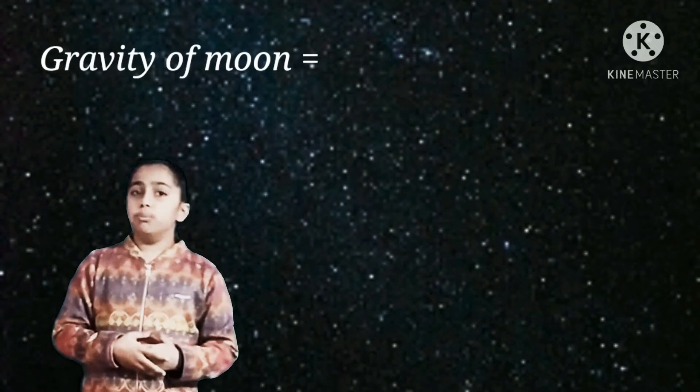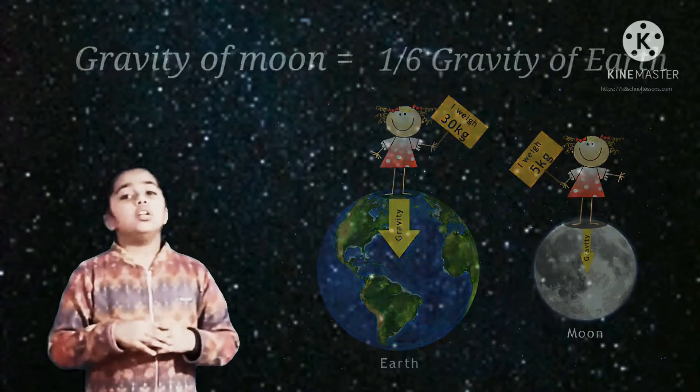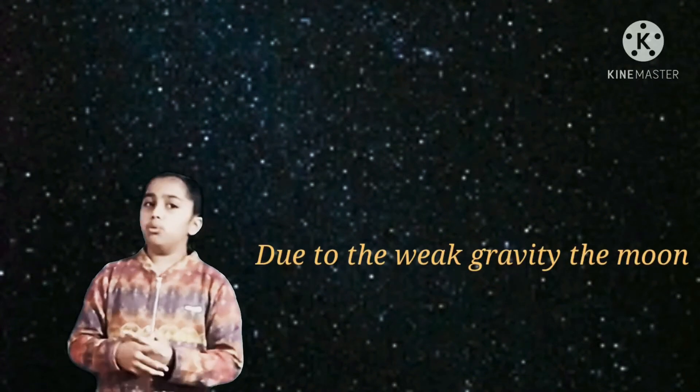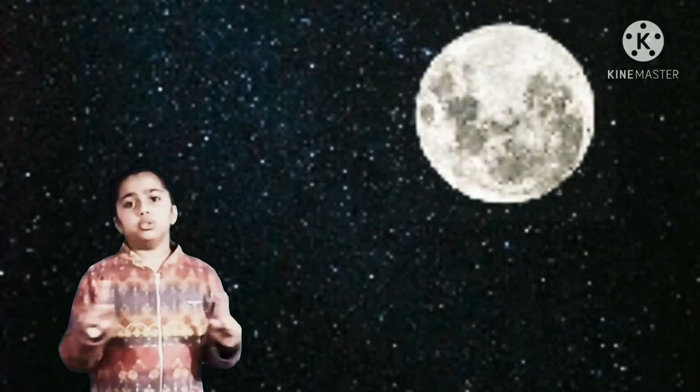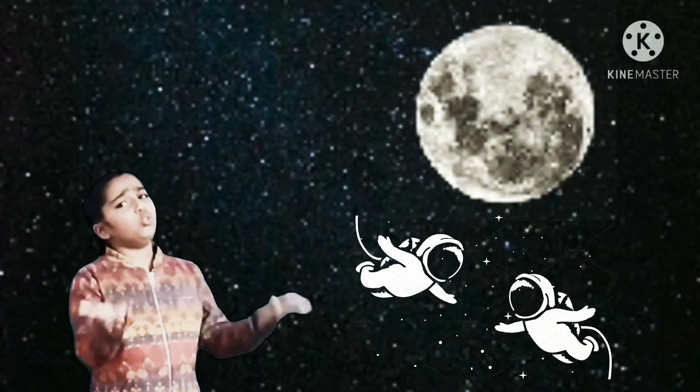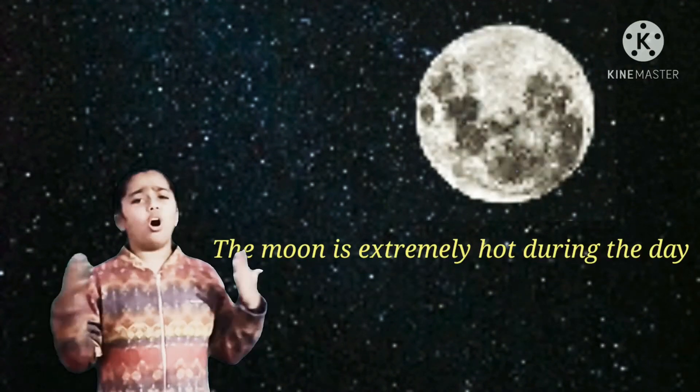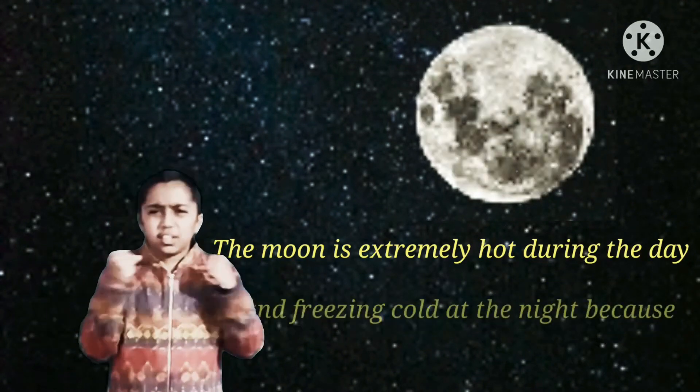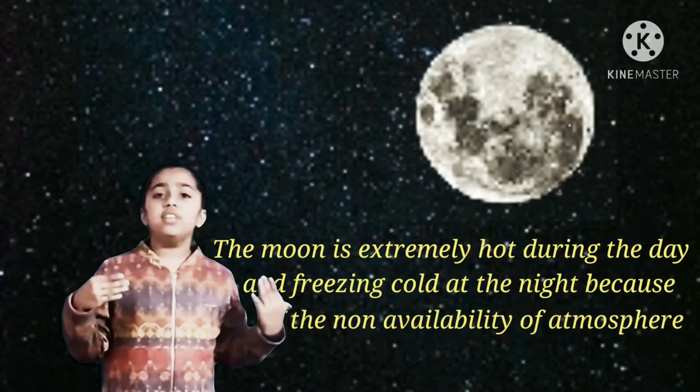The gravity of the moon is one sixth that of the earth. Due to the weak gravity, the moon cannot keep atmosphere around it. Because there is no atmosphere around the moon, we could not talk to each other at the moon. The moon is extremely hot during the day and freezing cold at the night because of the non-availability of the atmosphere.